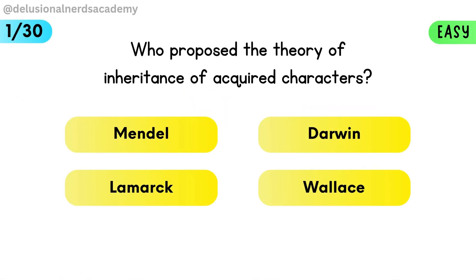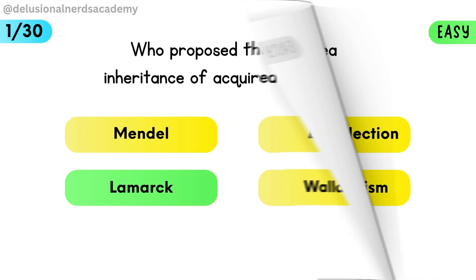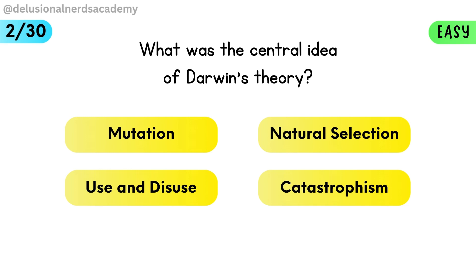Who proposed the theory of inheritance of acquired characters? Lamarck was the one that came up with the theory of inheritance of acquired characteristics. What was the central idea of Darwin's theory? Darwin's main idea was natural selection, where the fittest survive and reproduce.